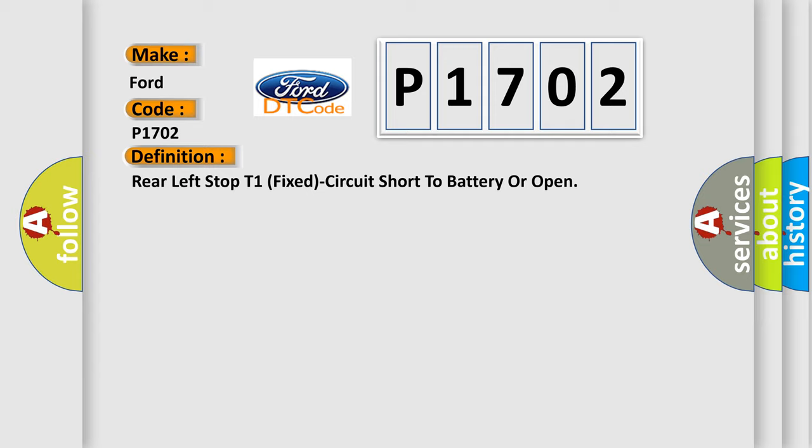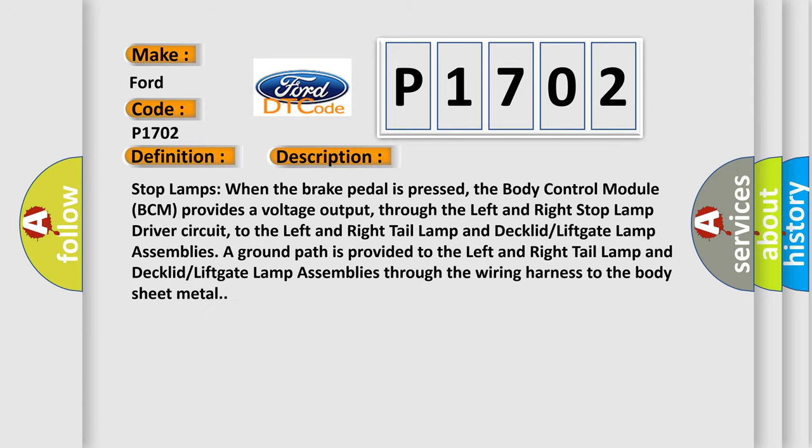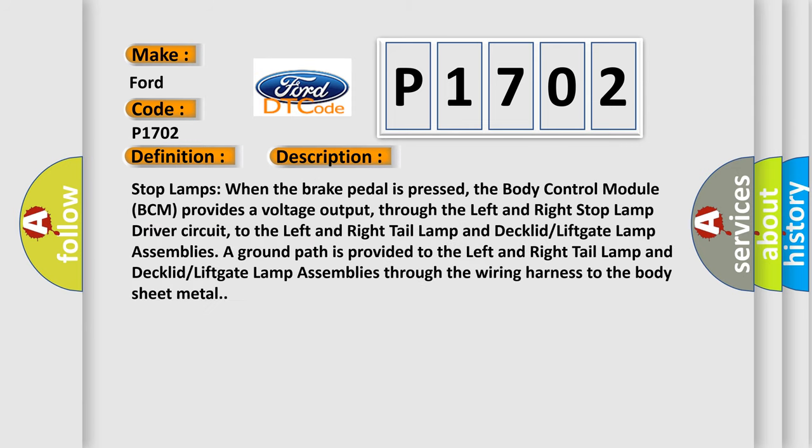The basic definition is: Rear left stop T1 fixed circuit short to battery or open. Stop lamps: when the brake pedal is pressed, the body control module (BCM) provides a voltage output through the left and right stop lamp driver circuit to the left and right tail lamp and declared lift gate lamp assemblies. A ground path is provided to the left and right tail lamp and declared lift gate lamp assemblies through the wiring harness to the body sheet metal.